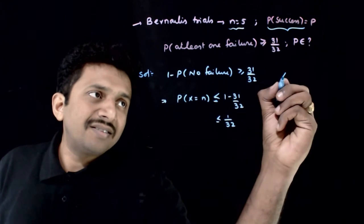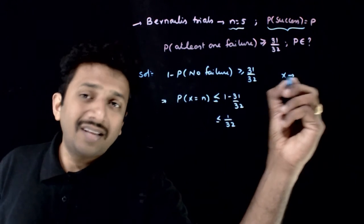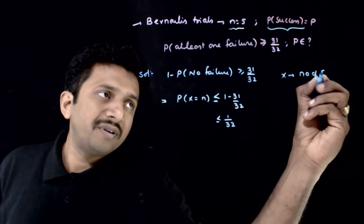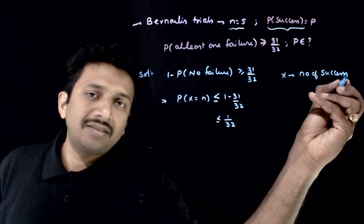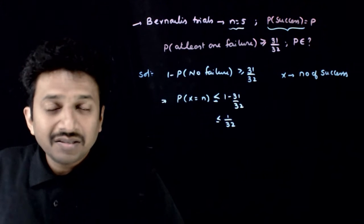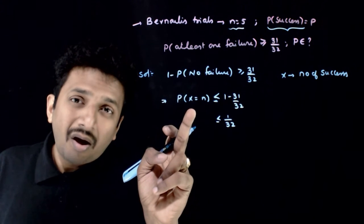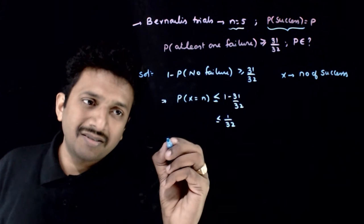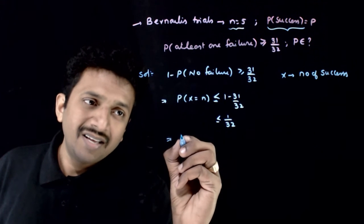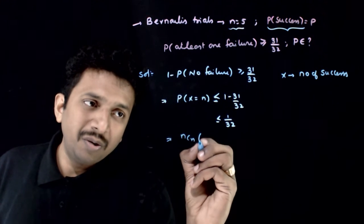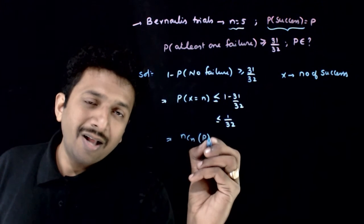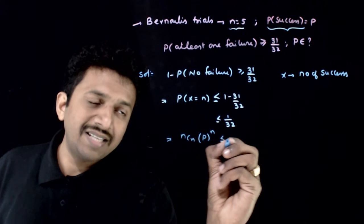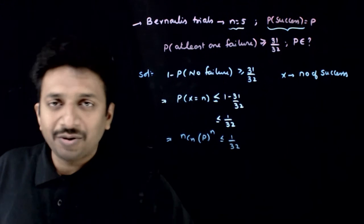Here x is the random variable which denotes the number of successes. Now, the probability of all successes is nCn multiplied by the probability of success to the power n, and this is less than or equal to 1 by 32.